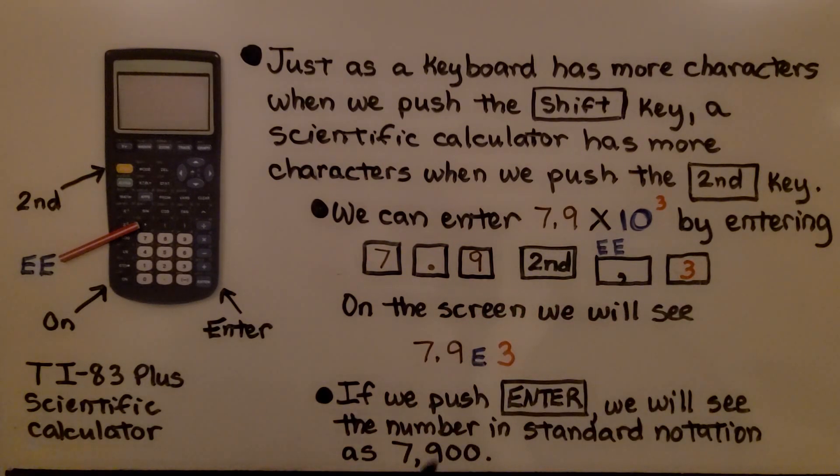On the screen, we'll see 7.9E3. If we push enter, we'll see the number in standard notation as 7,900.